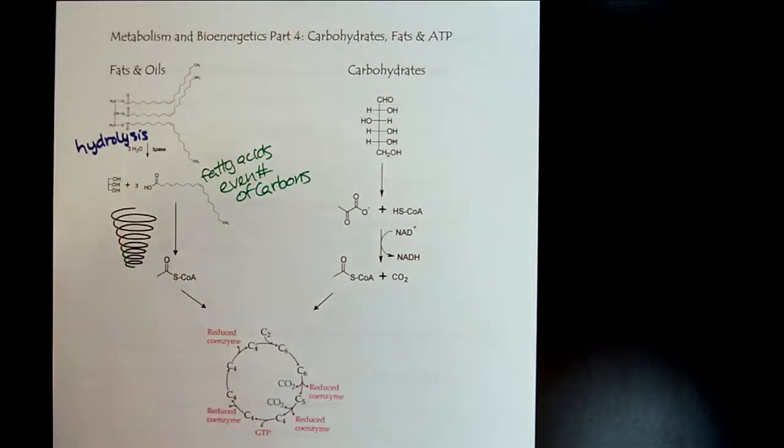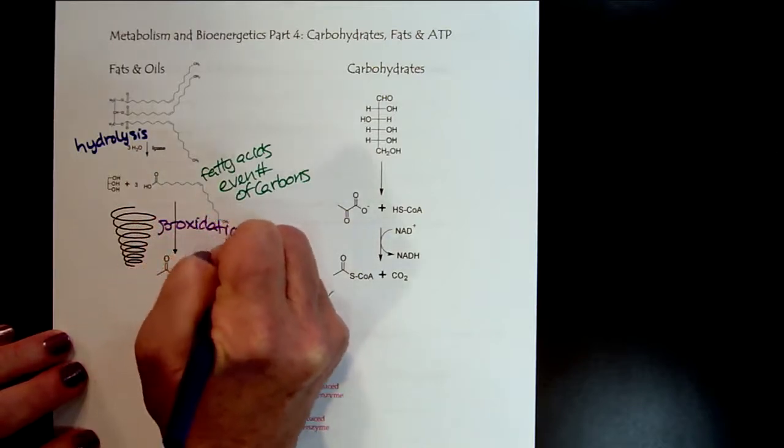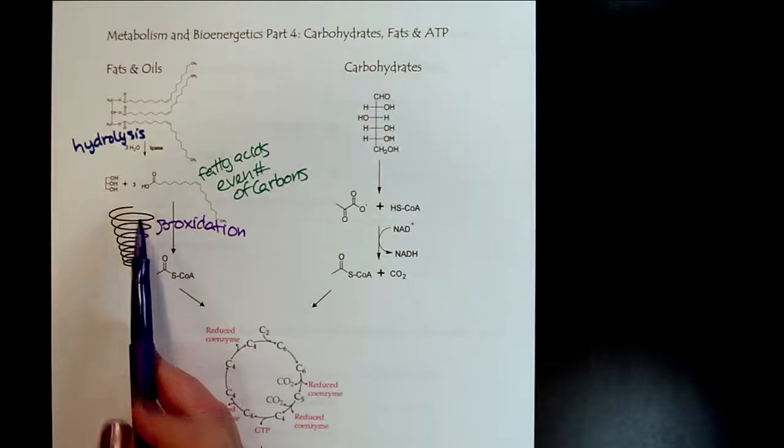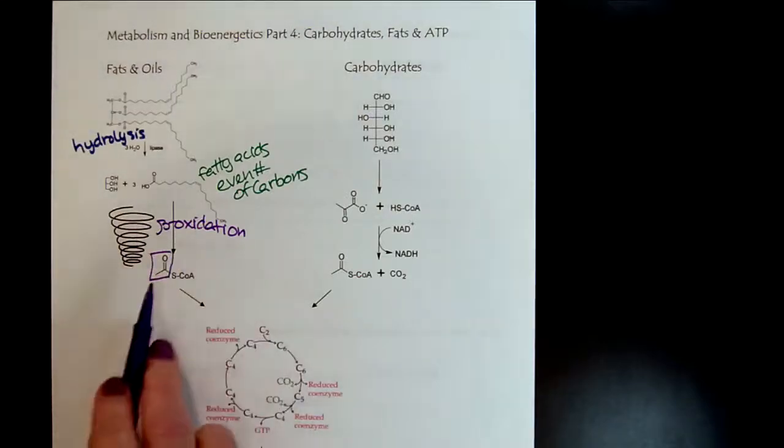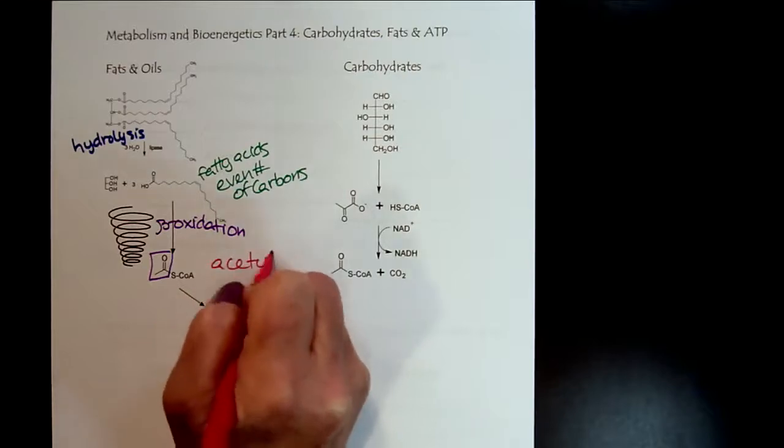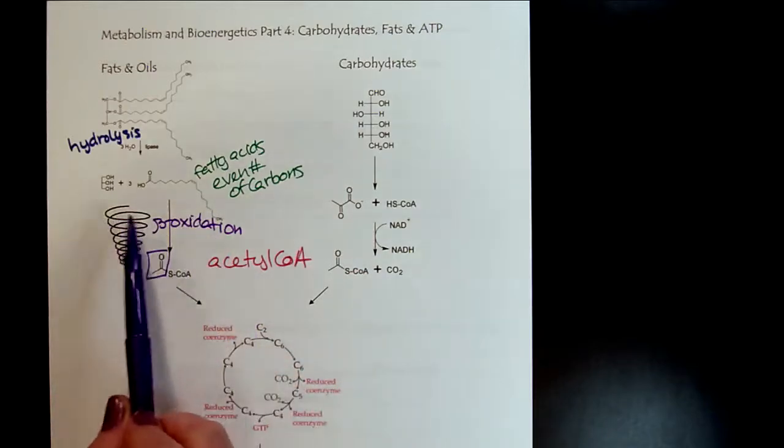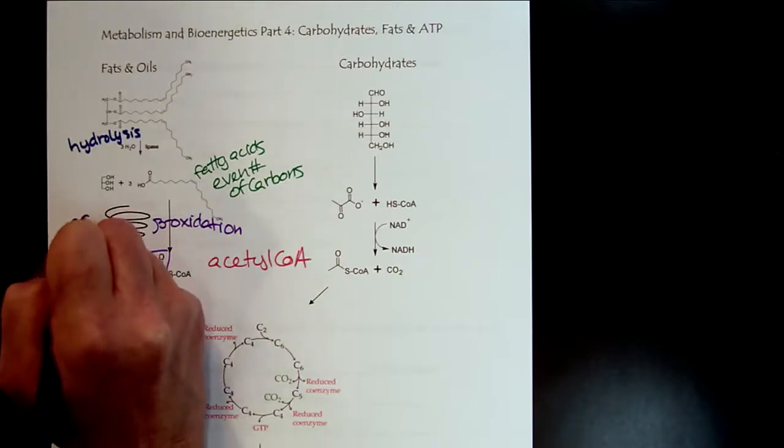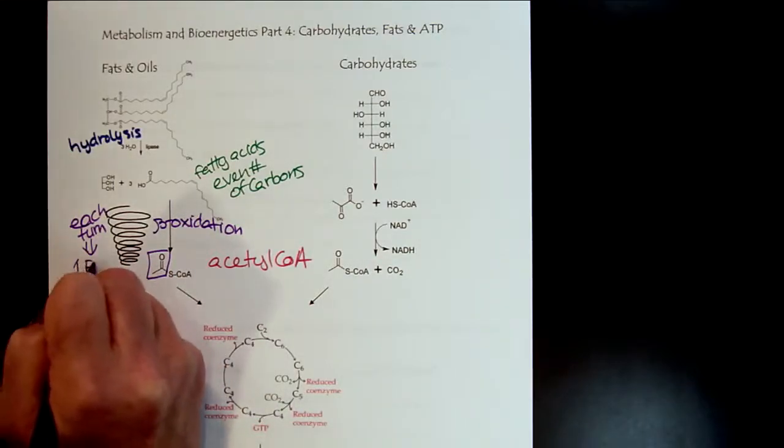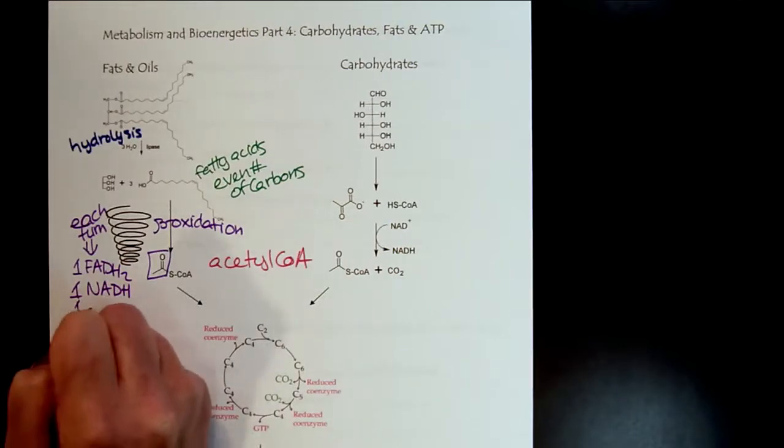And so this spiral is representing beta oxidation. We use a spiral instead of a circle because each time there's a turn of the beta oxidation there is a two-carbon loss forming acetyl-CoA. So here's our acetyl-CoA right here. As this fatty acid goes through the beta oxidation cycle, each turn of the beta oxidation is going to produce one FADH2 and one NADH, and one acetyl-CoA.